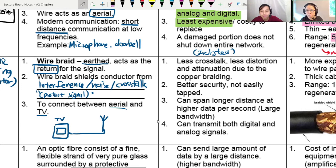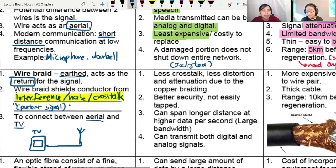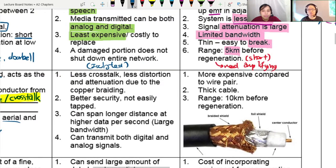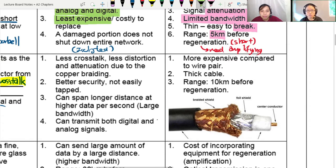So, because of this, we can relate it to the advantage. There is less crosstalk, less distortion, less attenuation, thanks to the copper braiding, the star of the coaxial cable. Very good. Better security. We cannot tap and listen into the conversation. And we can span a longer distance because there's less attenuation, can travel further and got larger bandwidth. So, the signal quality is better. And as usual, can transmit both digital and analog signals.